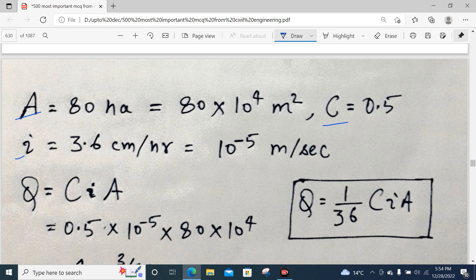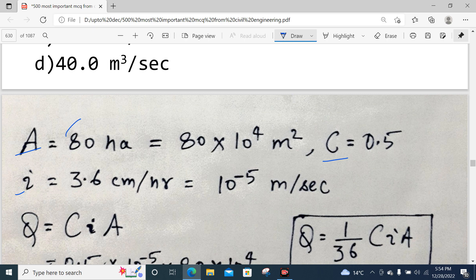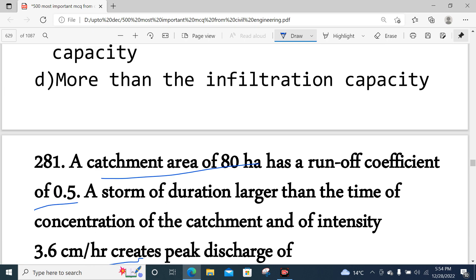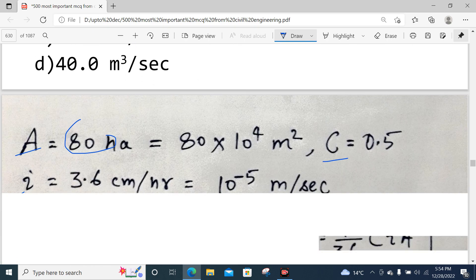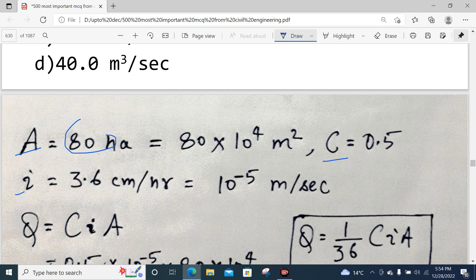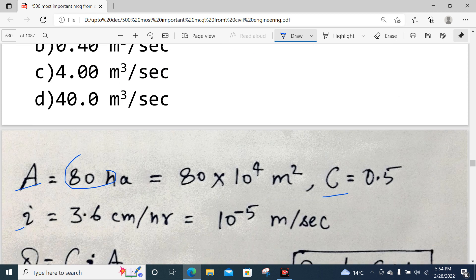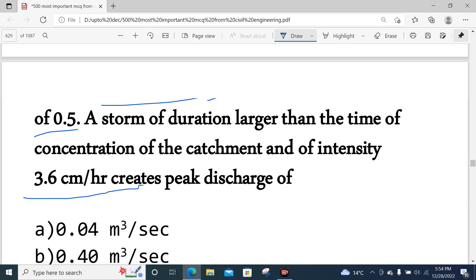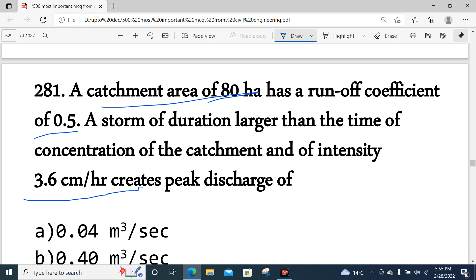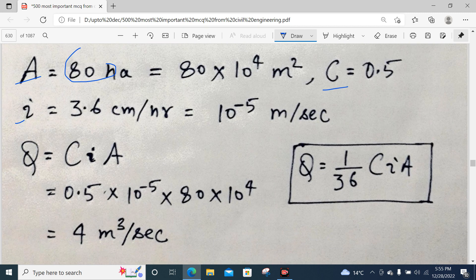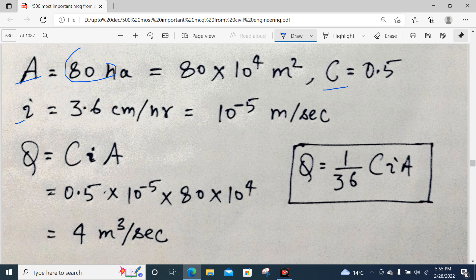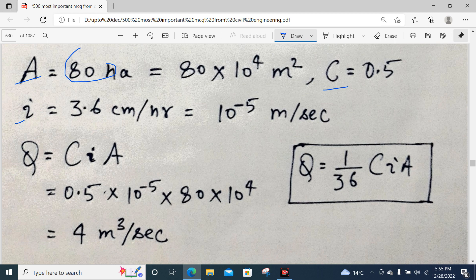Discharge is the coefficient times the intensity times the area. Area is 80 hectares, which equals 80 × 10^4 m². Coefficient of runoff is 0.5. Intensity 3.6 cm/hour equals 10^-5 m/sec.